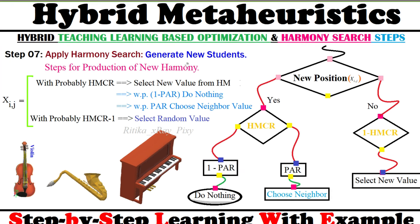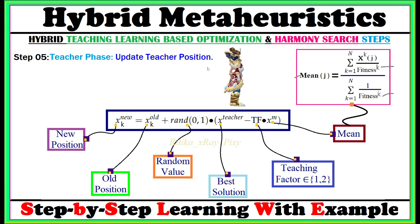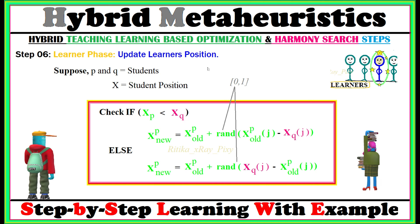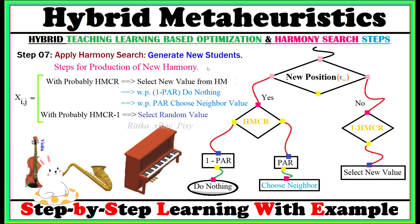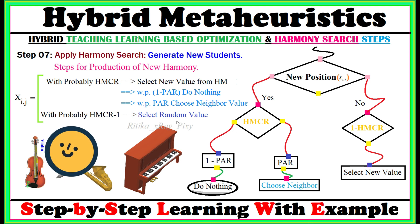After updating learner positions, in step 7 we generate new students by applying the harmony search algorithm. We select values from the harmony memory, then update the agent's position in the search space. We check the harmony memory acceptance rate and the pitch adjustment rate. According to the harmony memory acceptance rate and pitch adjustment rate, we either generate a new solution randomly or select neighbors.